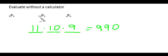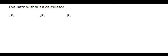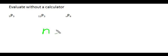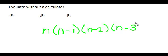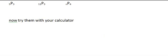For n objects taken 4 at a time, we have to use the multiplication principle. We have n objects, so the first slot has n choices, the second slot has n minus 1 choices, the third slot has n minus 2 choices, and the fourth slot has n minus 3 choices. Now let's try these with your calculator.